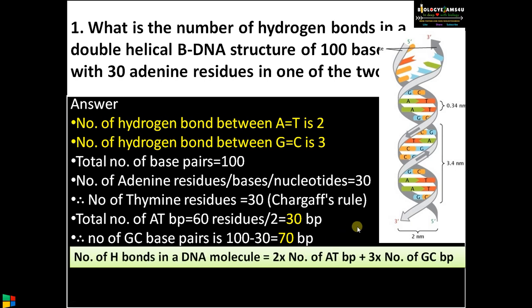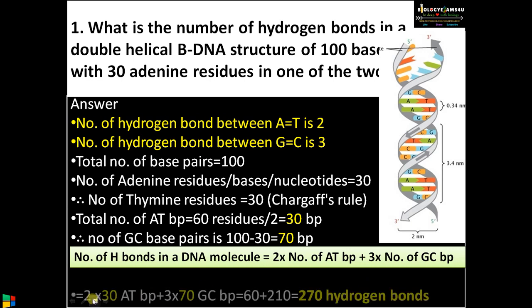Now let us substitute the values in the equation. Number of hydrogen bonds = 2 × (number of AT base pairs) + 3 × (number of GC base pairs) = 2 × 30 + 3 × 70 = 60 + 210 = 270 hydrogen bonds. Hope this much is clear. This is a very direct question.